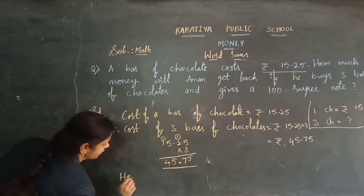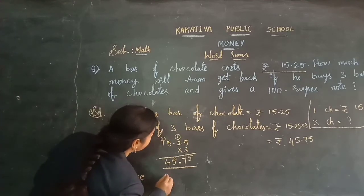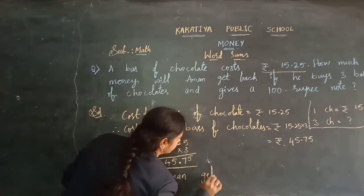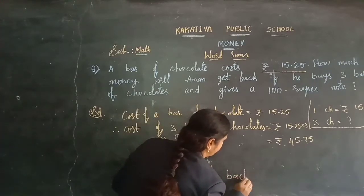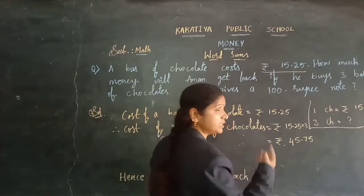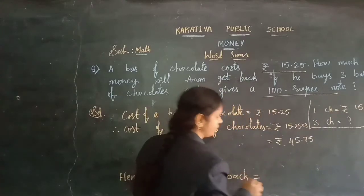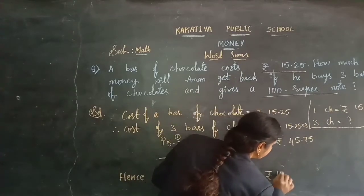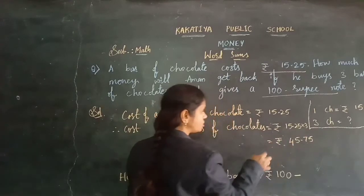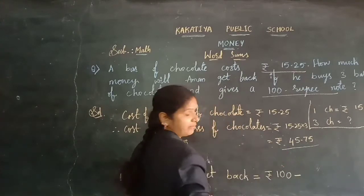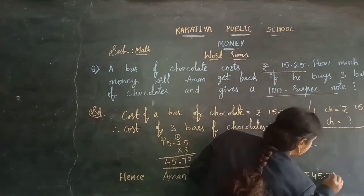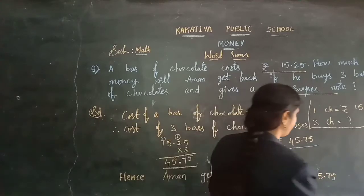This is the final step. Hence, Amal gets back: how much cost he has given — 100 rupee note — minus the cost of 3 chocolates which is 45 rupees 75 paise. You need to subtract 45 rupees 75 paise. Come on, let's subtract in the column.